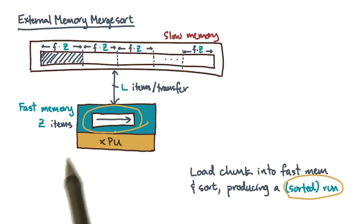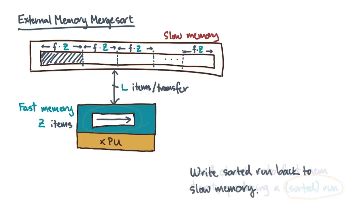As a mnemonic, this left to right arrow is to remind you that this chunk is sorted. Since the run is now sorted, write it back to slow memory.